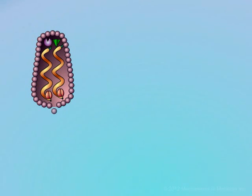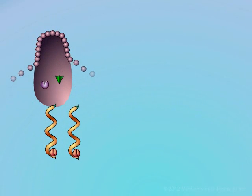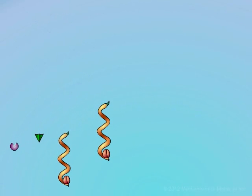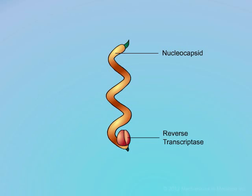The capsid then sheds its coat. The two viral RNA strands, which are themselves coated, and the viral enzymes are then released into the host cell cytoplasm.